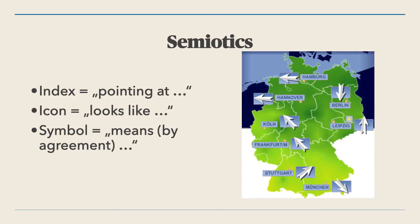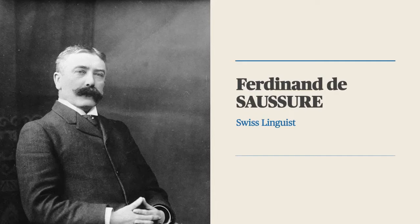And finally, symbol: a sign that conveys meaning according to a process of agreement, like the arrows on a weather map. For instance, a swastika does not carry the same connotation whether you find it in Germany or you see it in India.